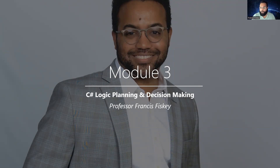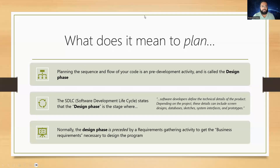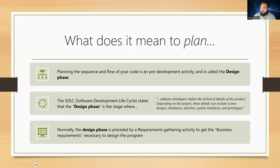What we're looking at right now is understanding something very important. What does it mean to plan? What are we planning in the first place? Why are we planning? Why don't we just go out there and do it? Well, there are a couple of things we need to take into consideration before we start developing something. When we plan, we're planning the sequence and flow of the code that we want to write. That planning process is a pre-development activity.